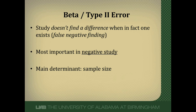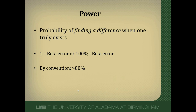The main determinant of beta or type 2 errors is sample size. The more people you put in the study, the lower the risk of a beta or type 2 error. By convention, when we design a study, we set our beta error at 10 to 20% — no more than 20%. Beta error is important because it determines the power of our study, and power is the probability that our study will find a difference between those intervention arms given that one truly exists.